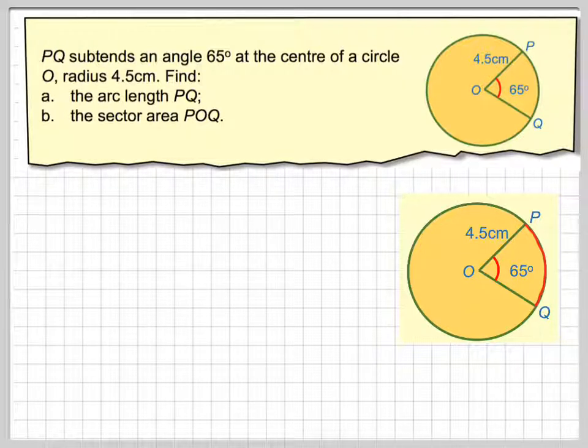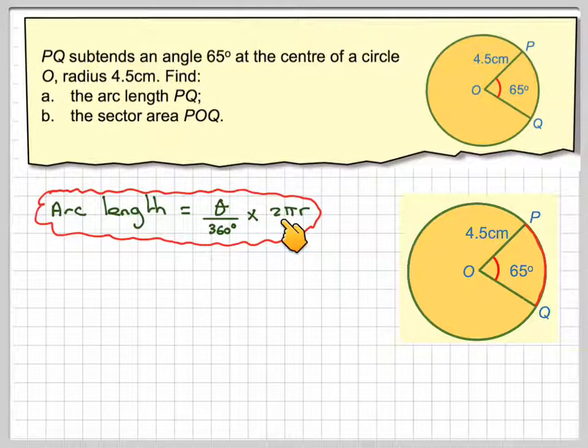So how do we find the length PQ? This is a fraction of the total circumference of the circle. The fraction is the angle divided by 360 degrees, times the circumference, which is 2πr. So it's that fraction times 2πr.